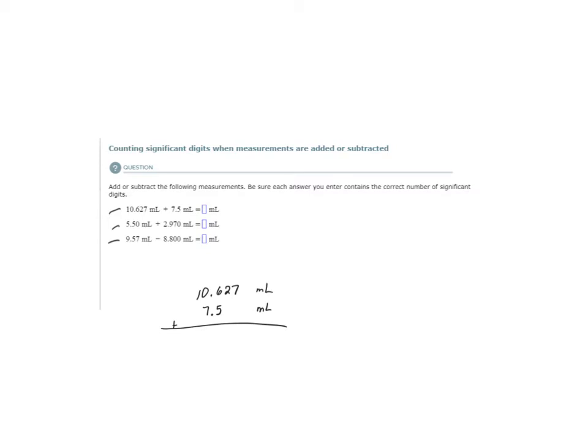If I'm familiar with the rules for addition and subtraction, I know that my final answer cannot have more decimal places than the value with the least number of decimal places. This first value has one, two, three decimal places, and the second value has one decimal place. So my answer is going to be limited to one decimal place.